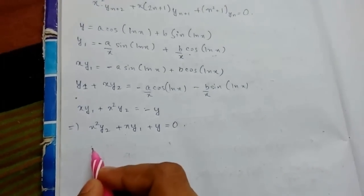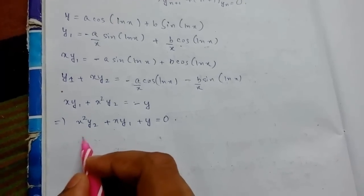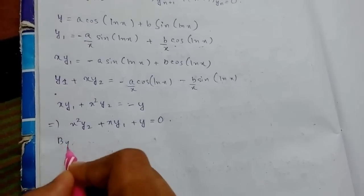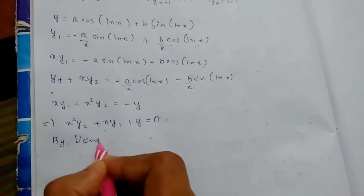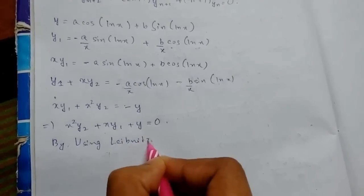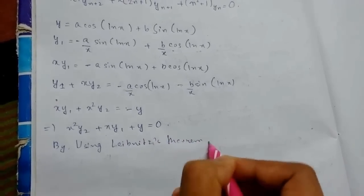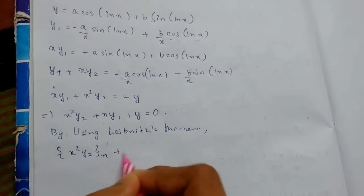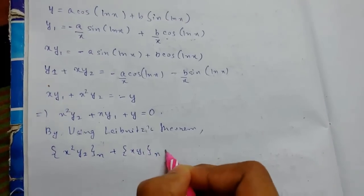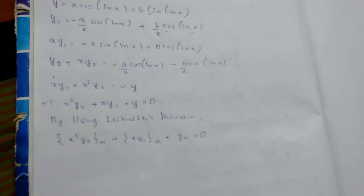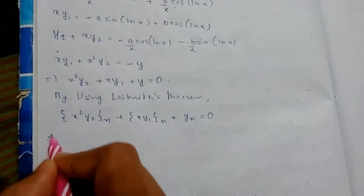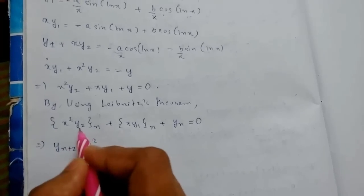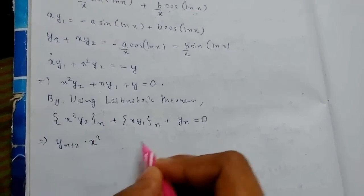Now using Leibniz's theorem, we will differentiate all three terms n times. By applying Leibniz's theorem to x²·y₂, taking u = x² and v = y₂, the nth derivative expansion gives: x²·y_{n+2} for the leading term.